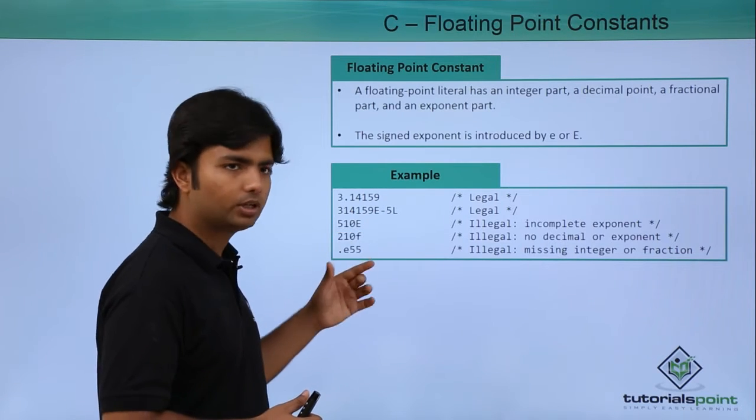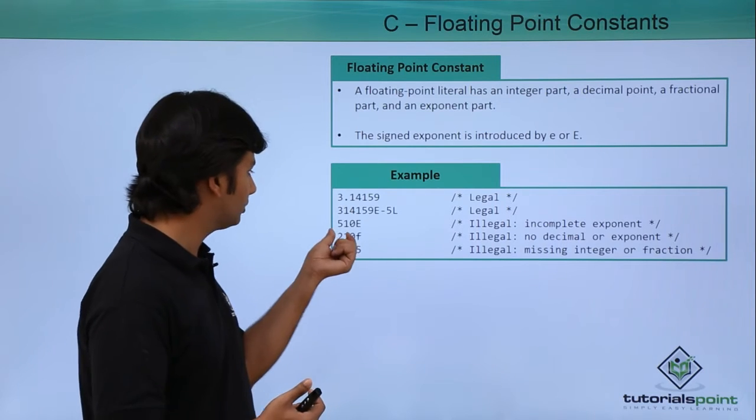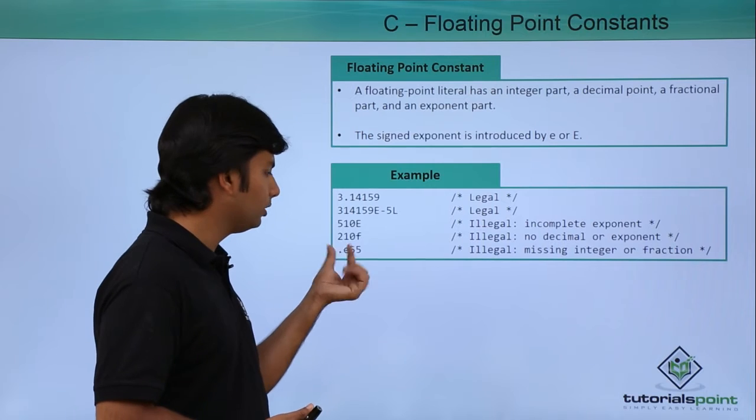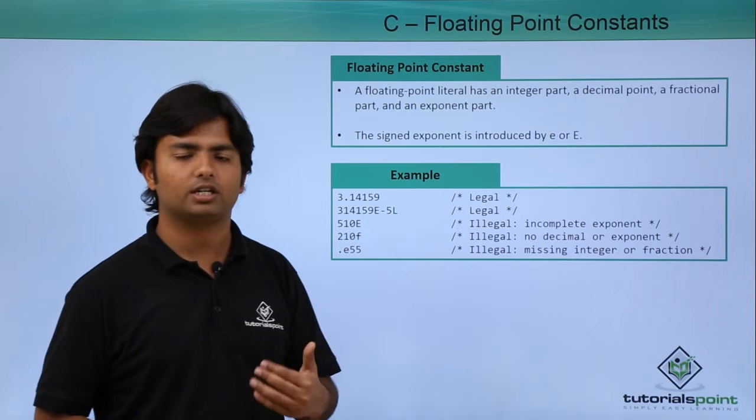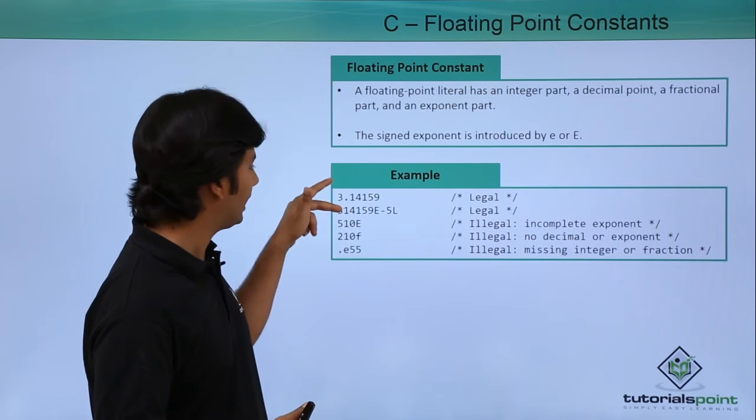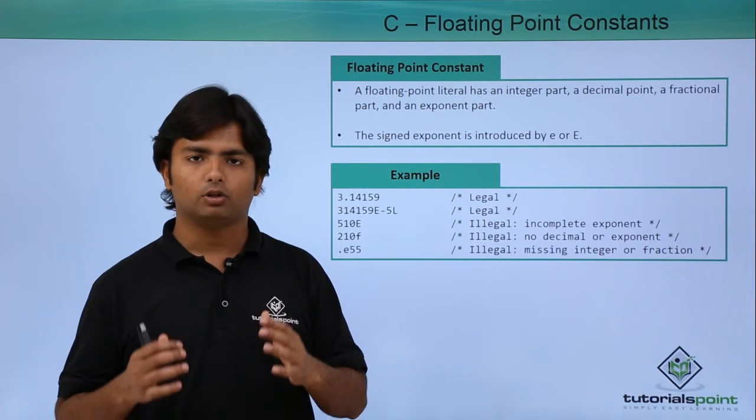Here we have written F for float but there is no decimal value, and here after the decimal we started with the exponential, which is again an invalid value for a floating number. You can use valid values like these to initialize any fractional number for a floating point.